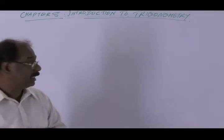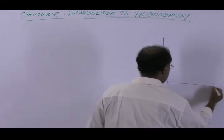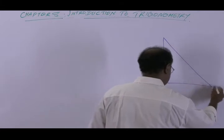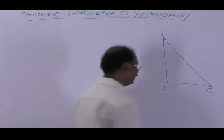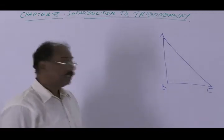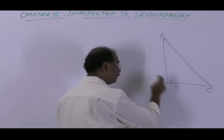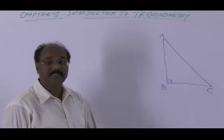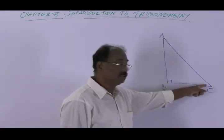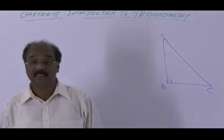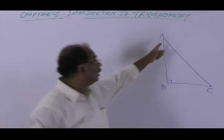So consider a right-angled triangle. Suppose triangle ABC is a right-angled triangle, right-angled at vertex B. Here one angle is 90°, and therefore the other two angles together will be 90°. So these two angles are acute angles.